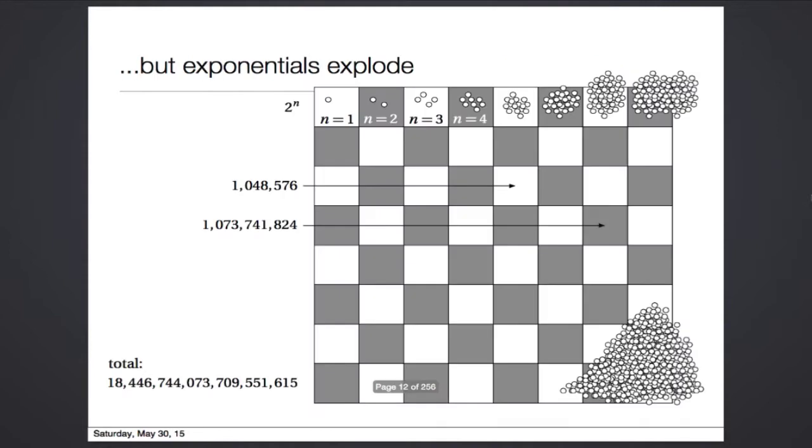But exponentials explode. If you put one grain of rice on the first square of a chessboard, and then on every subsequent square, you double the number of grains of rice. This may seem like an innocuous task, but by the time you get to the third row of the chessboard, you'll have a million grains of rice. By the time you get to the fourth row, you'll have a billion, and by the time you get to the end of the chessboard, you'll have 18 quintillion grains of rice.